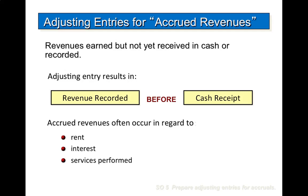Revenues earned but not yet recorded at the statement date are accrued revenues. Accrued revenues may accumulate with the passing of time, as in the case of interest revenue. These are unrecorded because the earning of interest does not involve daily transactions. Companies do not record interest revenue on a daily basis because it is often impractical to do so. Accrued revenues also may result from services performed but not yet billed nor collected, as in the case of commissions and fees.